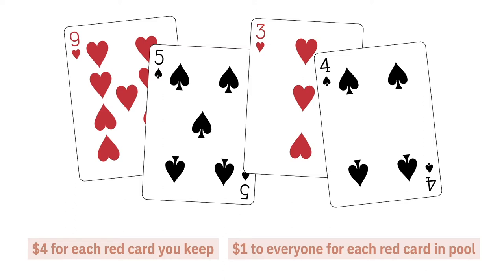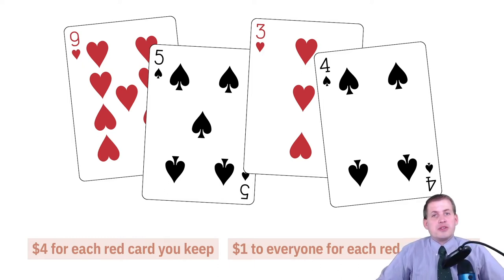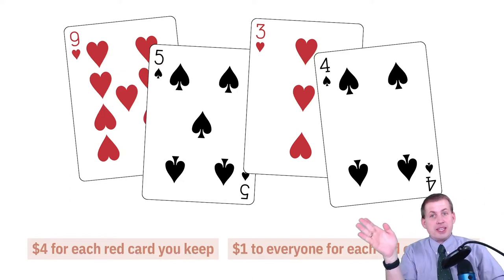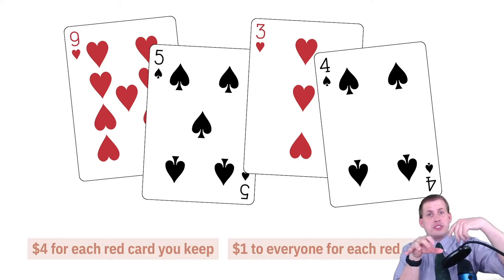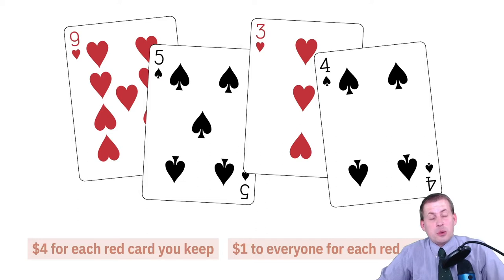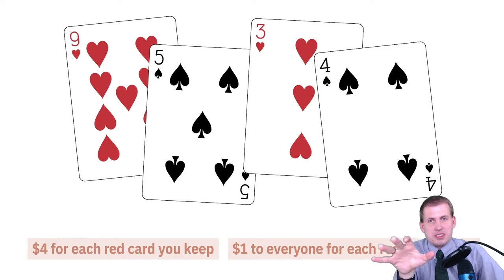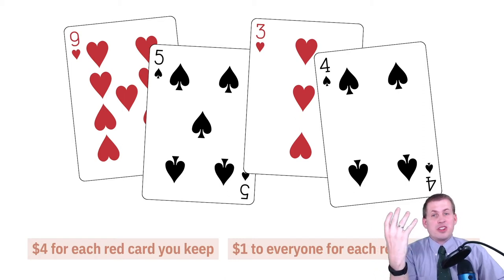Everybody in the class gets a dollar for every red card that shows up in the pool. So if there are 30 people and 15 of them put red cards in the middle, you get 15 dollars as a bonus in addition to whatever red cards you kept. If you keep both your red cards and 15 others each donate one, you get eight dollars for your kept cards plus the 15 from the pool — 23 dollars total, without doing anything to earn those free 15. In this simulation, you're not allowed to talk to or coordinate with each other.